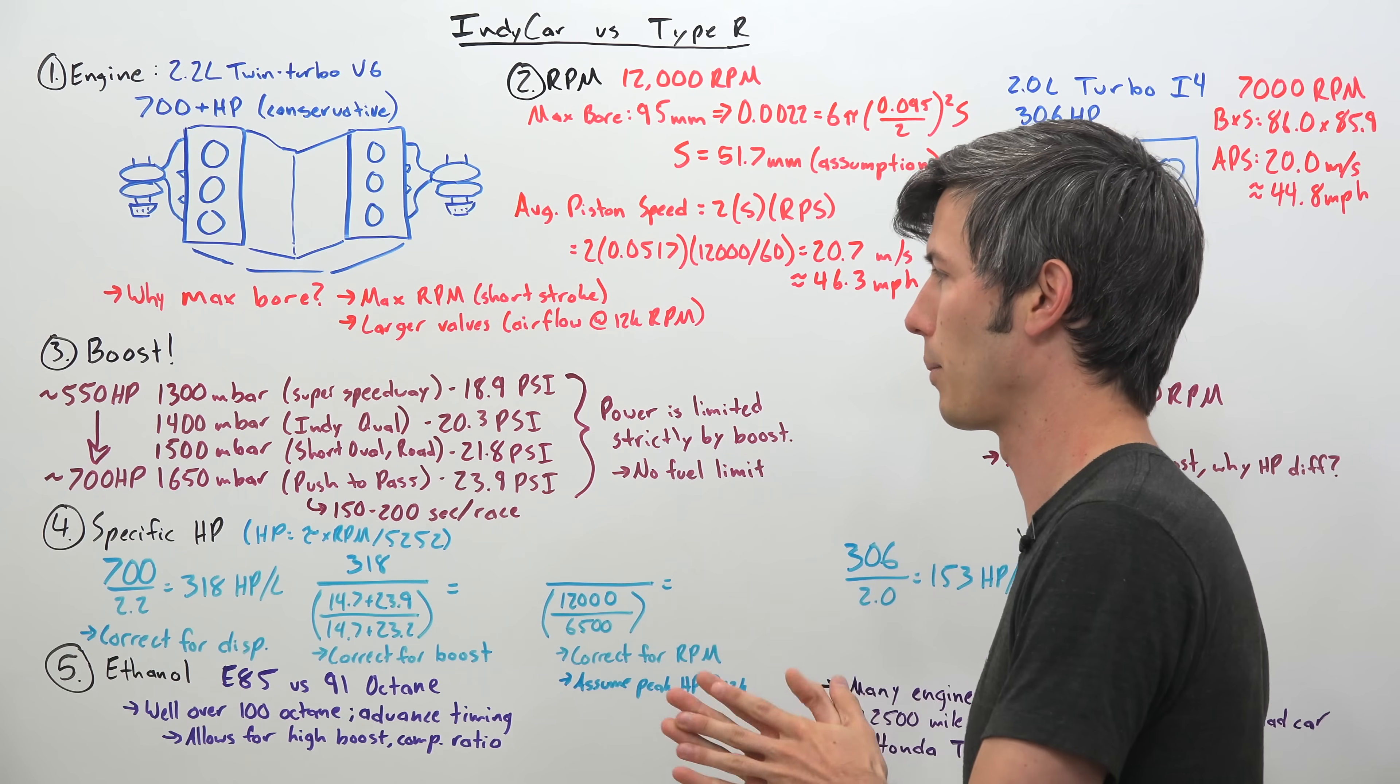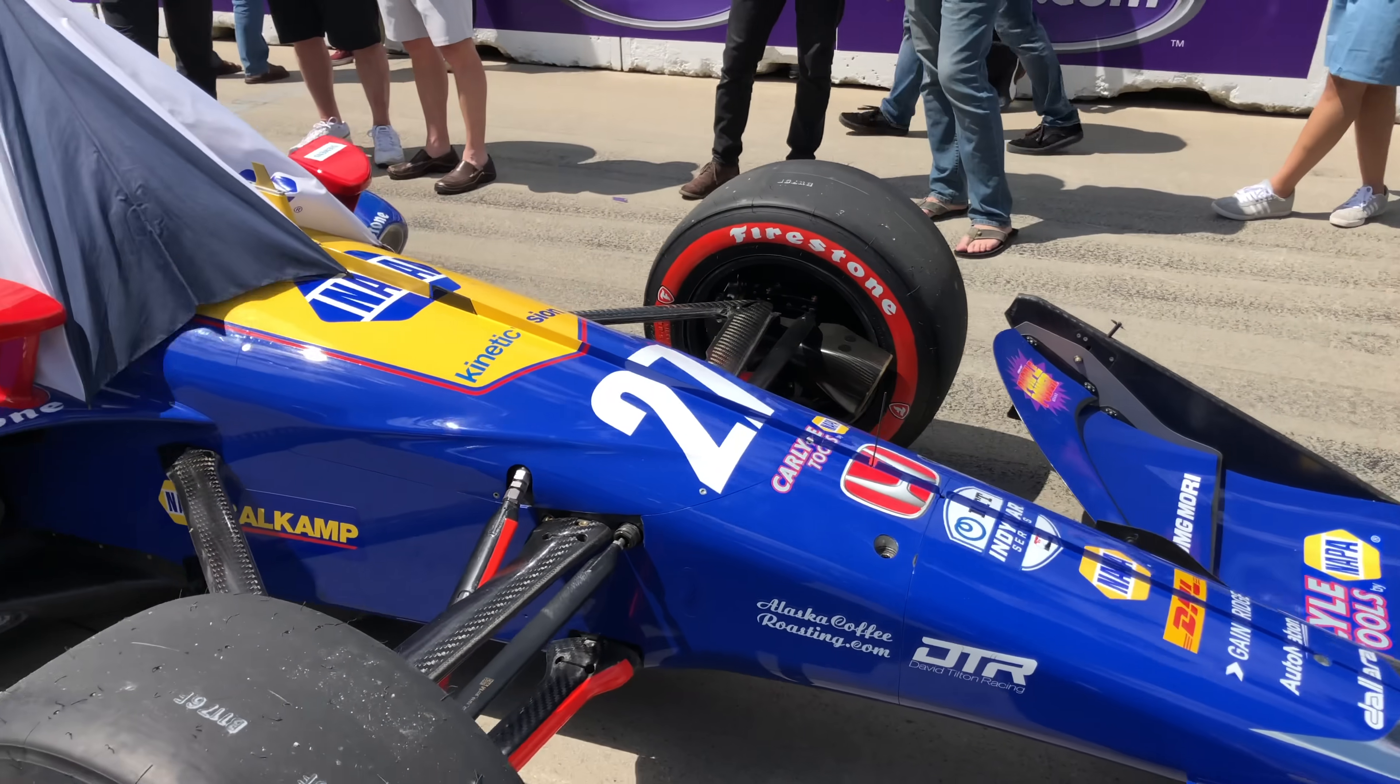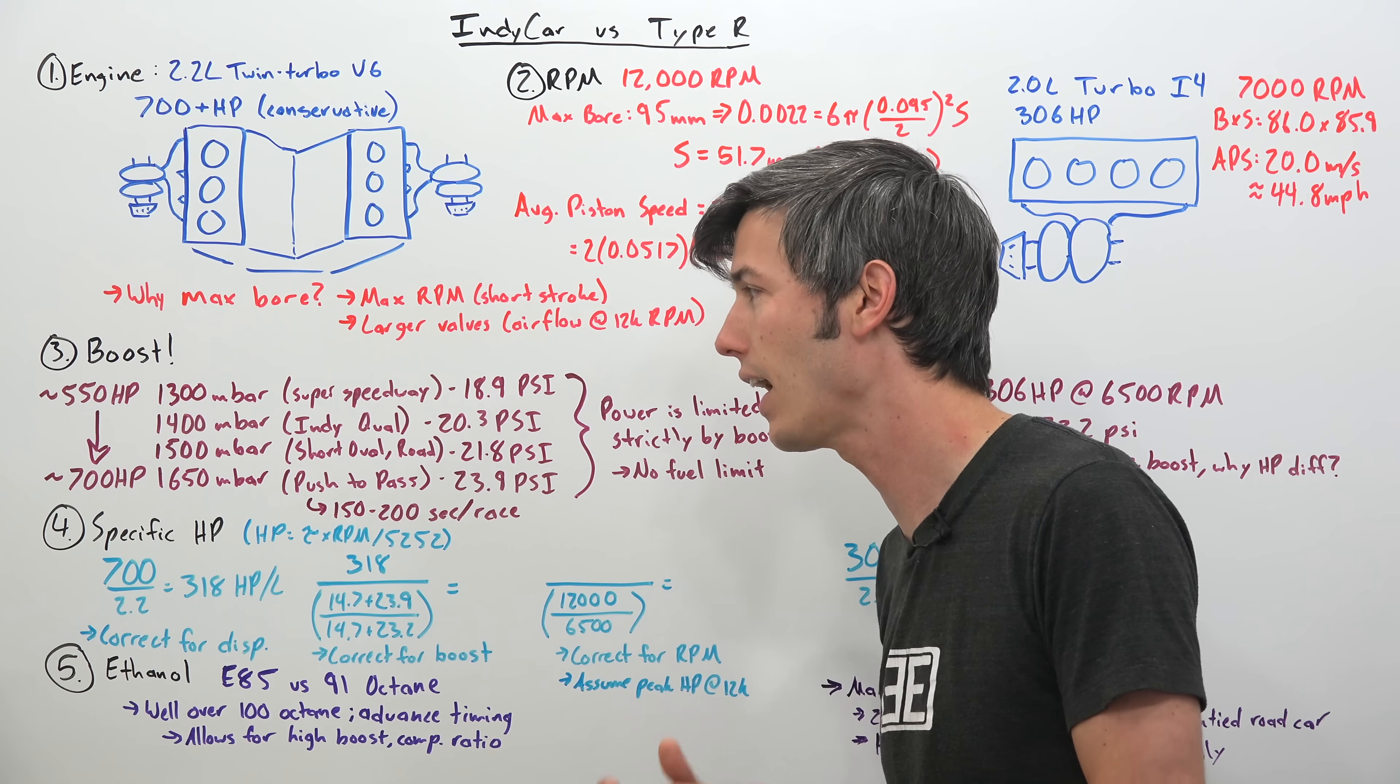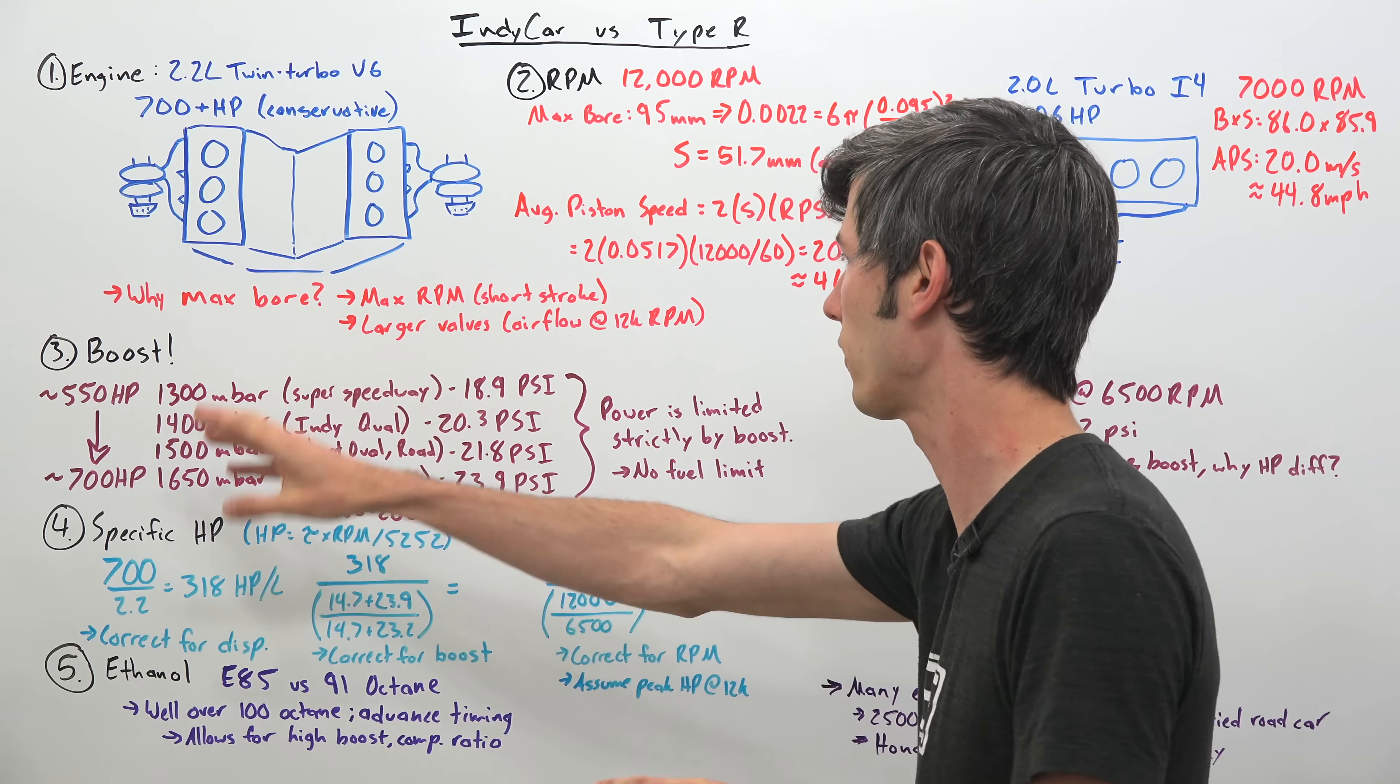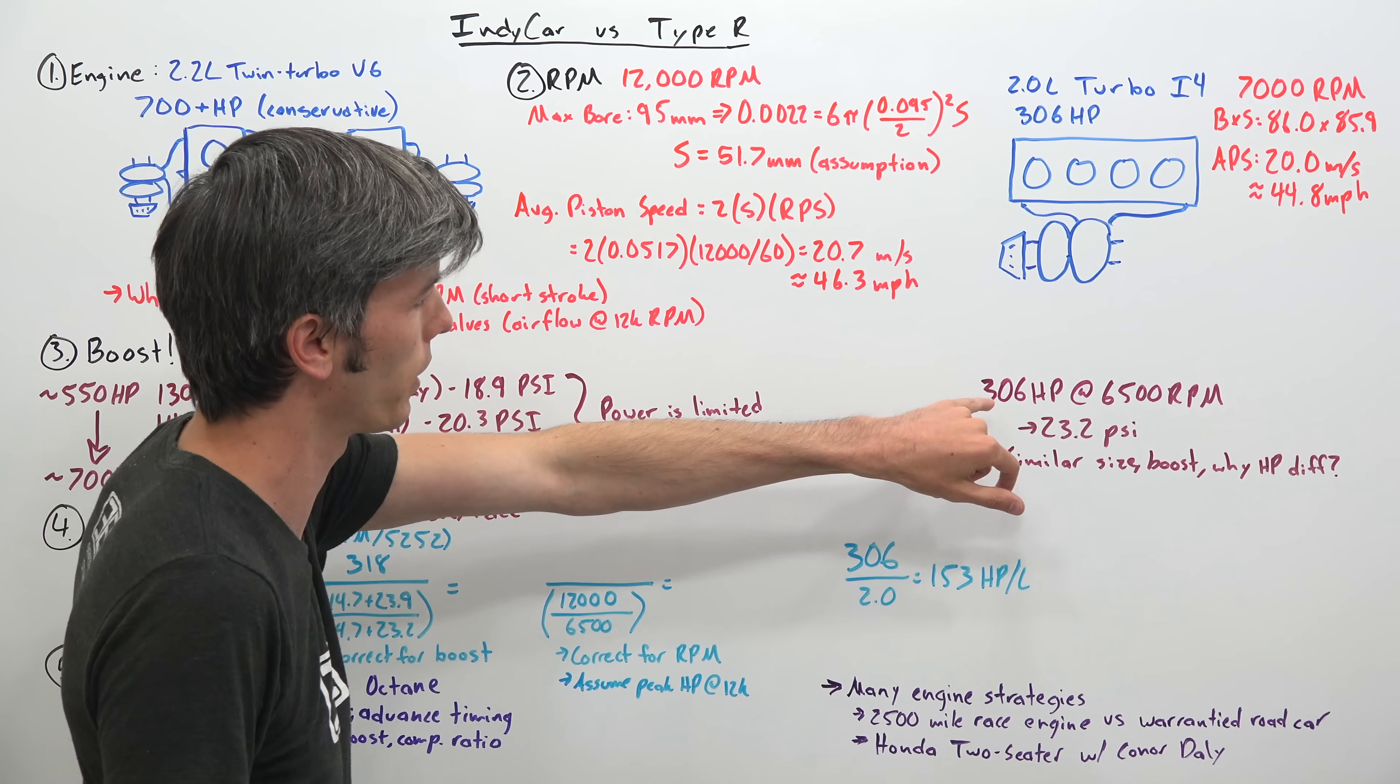Now there's also a push to pass functionality on these IndyCars. So they have about 150 to 200 seconds depending on the track of this push to pass boost that they can use at any time during that race. And that gives them maximum boost pressure of 1650 millibar or 23.9 psi and about 700 horsepower. So the engine ranging from about 550 to about 700 horsepower. Again conservative estimates there, it's probably significantly higher than that but somewhere in that region. And so using this push to pass we're at 23.9 psi versus the Honda Civic Type R which is at 23.2 psi for its peak horsepower, 306 horsepower at 6500 rpm.